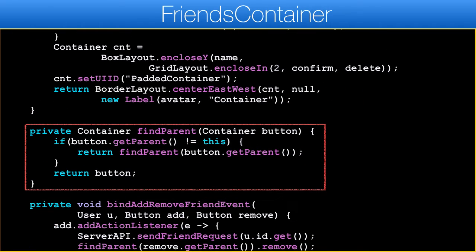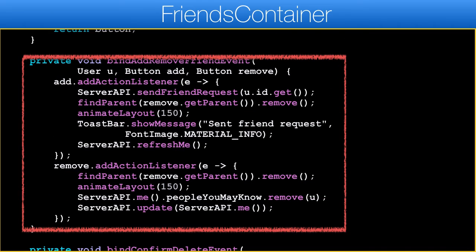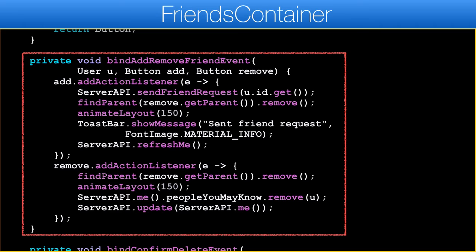When we remove or add a button we need to remove the container of the friend from the hierarchy. But at the stage where we bind the event we don't have an instance of that container yet. A workaround is to locate that container by traversing through the hierarchy of the components — here we recursively look through parent containers. We stop when the parent is the friends container itself, relying on the fact that a friend suggestion is added directly to the parent friends container.